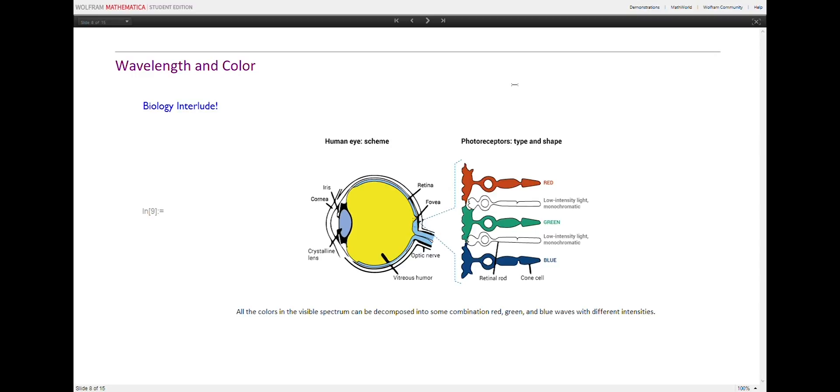Red has a wavelength of about 700 nanometers, green, 546, and blue, 436.